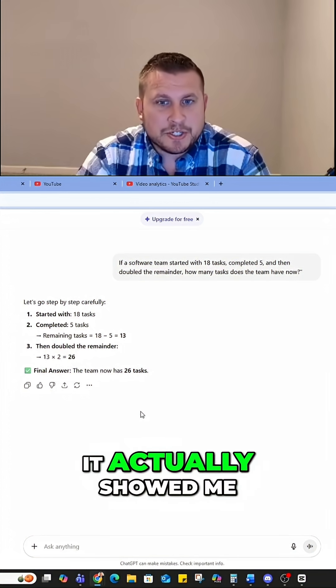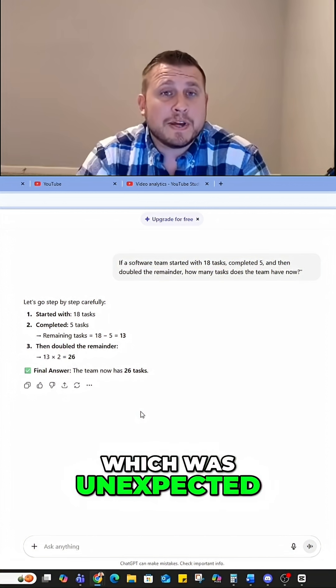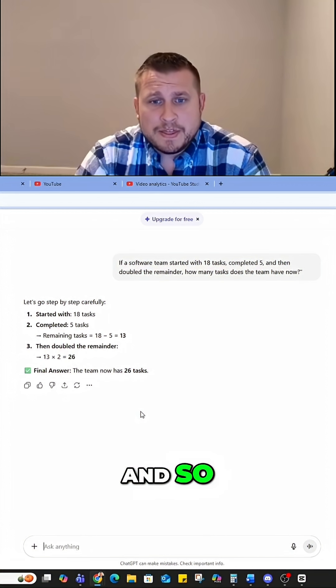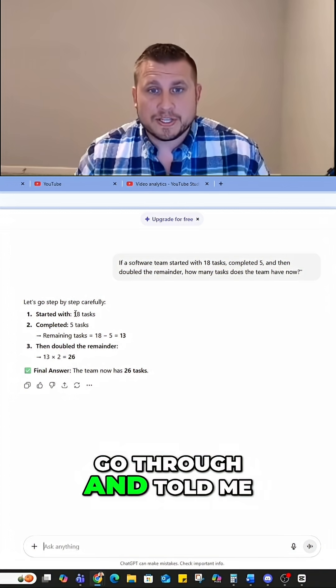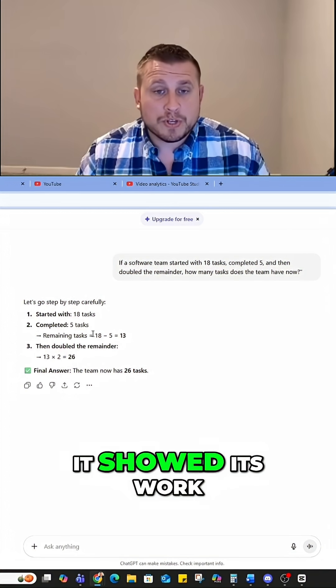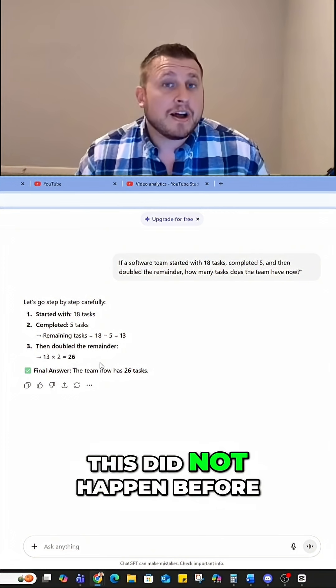Interesting thing was it actually showed me the chain of thought, which was unexpected. The answer is 26, but the important part is that it did go through and told me, it showed its work. It did what it was supposed to do. This did not happen before.